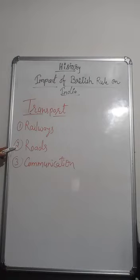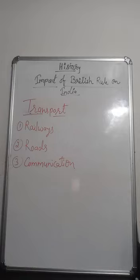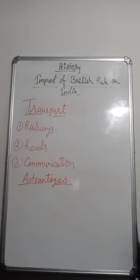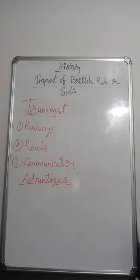The Grand Trunk Road connected major regions. Telegraph lines were laid for easier and faster communication. The advantages of transportation included: travel and transportation became quicker and cheaper, prices of goods became stable, in times of famine food grains could be supplied to affected areas quickly, growth of industries took place, and linking places helped link people, which in turn helped the Indian national movement.